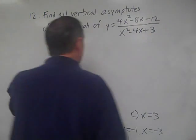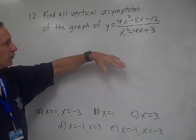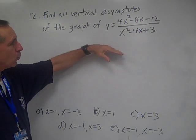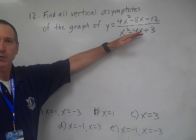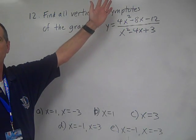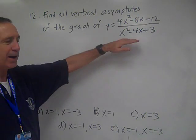Okay, find all vertical asymptotes. Basically what you're doing is trying to find where the denominator is equal to zero, because division by zero can cause a vertical asymptote. So what I would do is factor first.